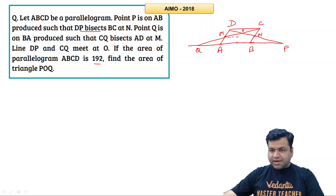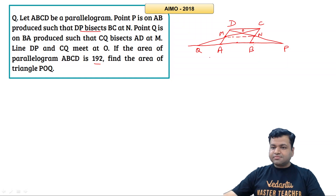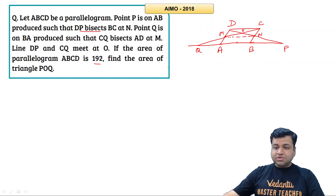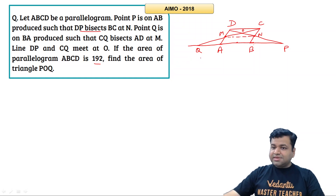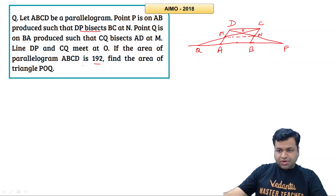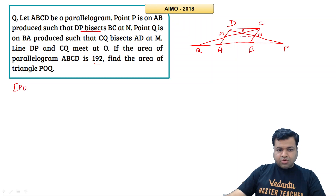Let's join M and N. Since M and N are the midpoints of AD and BC respectively, the parallelogram MNCD has area equal to half the area of parallelogram ABCD. We are interested in the area of triangle POQ.